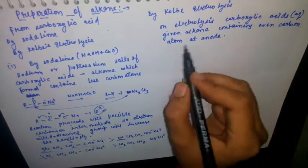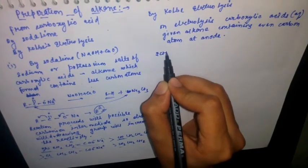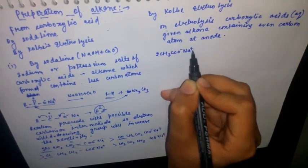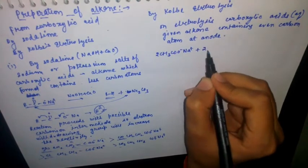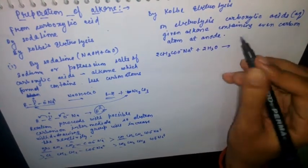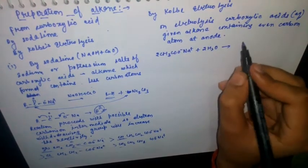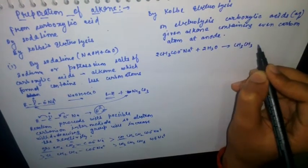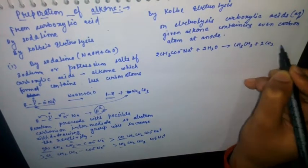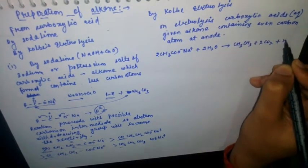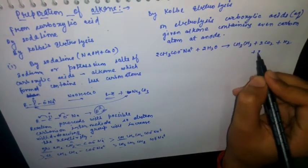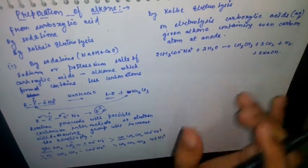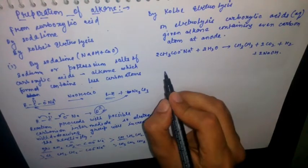The reaction for Kolbe electrolysis is: CH₃COO⁻Na⁺ plus 2H₂O gives CH₃CH₃ plus 2CO₂ plus H₂ plus 2NaOH. So we get an even-carbon-atom alkane at the anode.